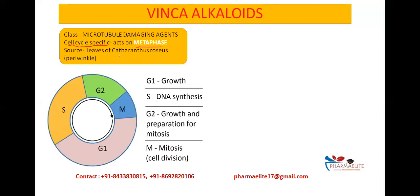The cell cycle is divided into four phases: G1 phase, S phase, G2 phase, and M phase. The M phase is the mitosis phase, which is again divided into four phases: prophase, metaphase, anaphase, and telophase. Cell cycle specific drugs act on the cell in a specific phase of the cell cycle, while cell cycle non-specific drugs are not dependent on the cell being in any particular phase and can affect the cell in all phases.